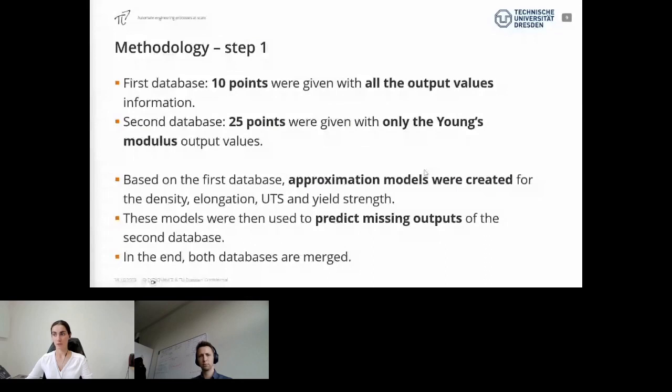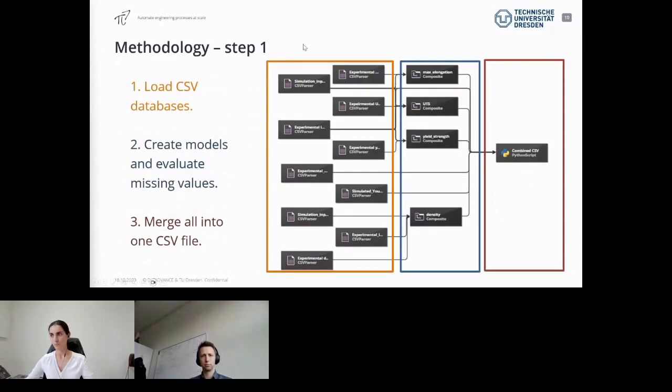Based on those 10 points, we were able to build approximation models and then use these approximation models to get an estimation of the density, elongation, UTS, and yield strength of the remaining 25 points. We then used those models to predict the missing outputs, and with that we had a full database with all the information of 35 points, which is not a big database but still we wanted to use as much information as possible. To do that more practically, we were using this workflow. I decided to split it into three steps.